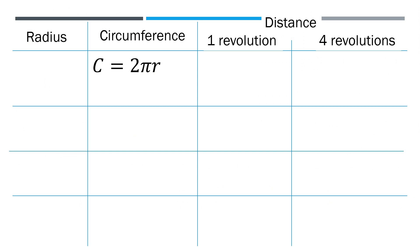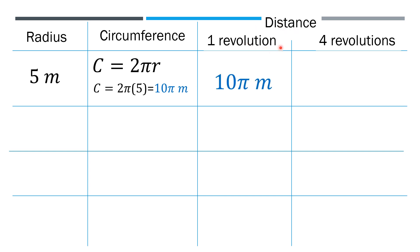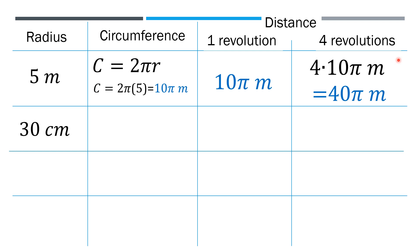Let's check the relationship: radius, circumference, revolution, and distance. Let's say the radius is 5 meters. So 2π times 5 gives us 10π meters. The circumference of the circle represents the distance after one complete revolution, so it remains to be 10π meters. For 4 revolutions, that's 4 times 10π meters, because one revolution equals 10π meters when it comes to distance. So we have 40π meters.